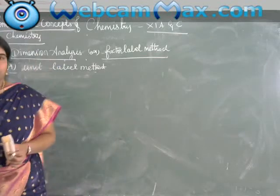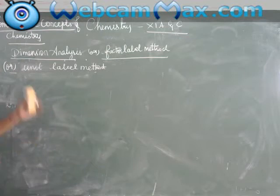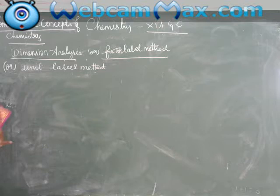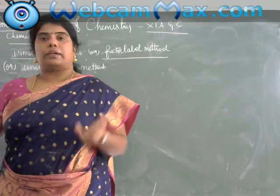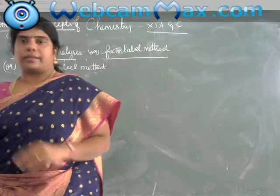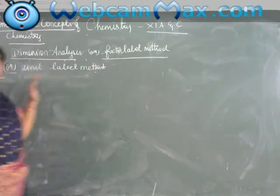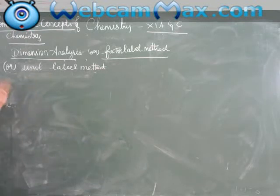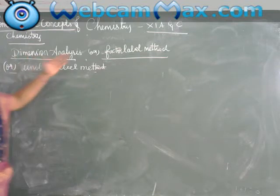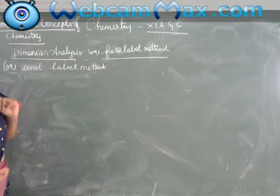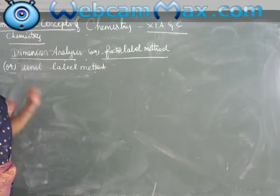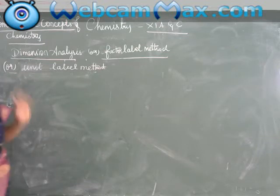Good morning my dear loved students. Now I am going to start dimensional analysis. The use of dimensional analysis is that we can convert the unit from one system to another system. Dimensional analysis is otherwise called factor label method, or unit label method. There are three names: dimensional analysis, factor label method, and unit label method.